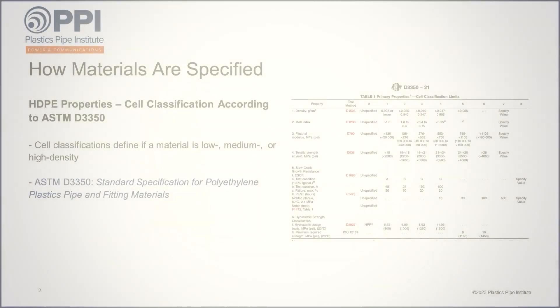In the previous PPI training short, we looked at the nature of HDPE materials and why they are ideal for manufacturing Conduit. In this training short, we look at how the materials are specified in the common standards for HDPE Conduit.